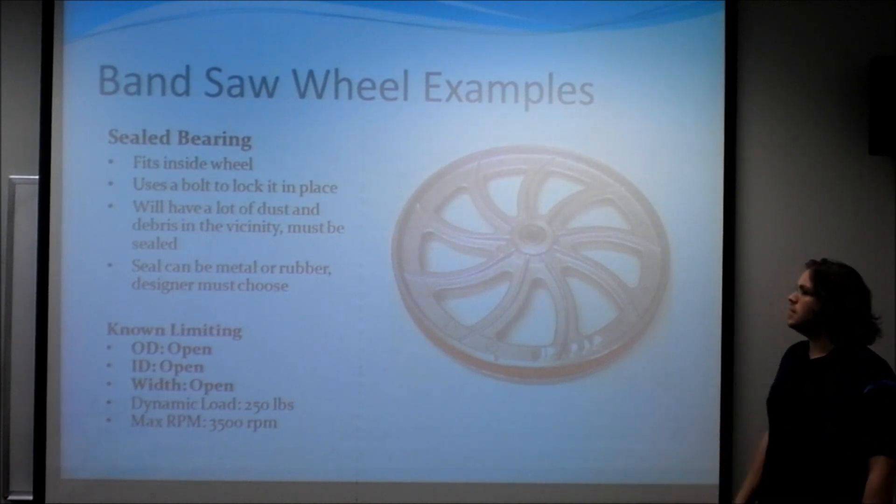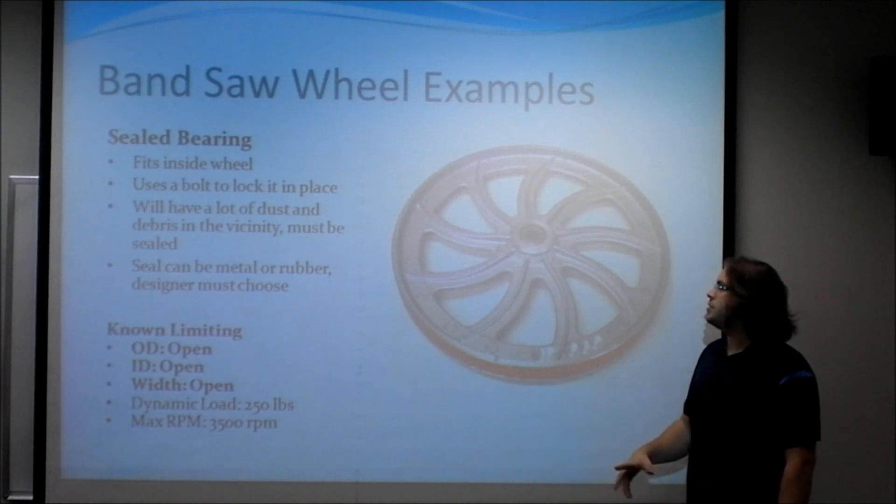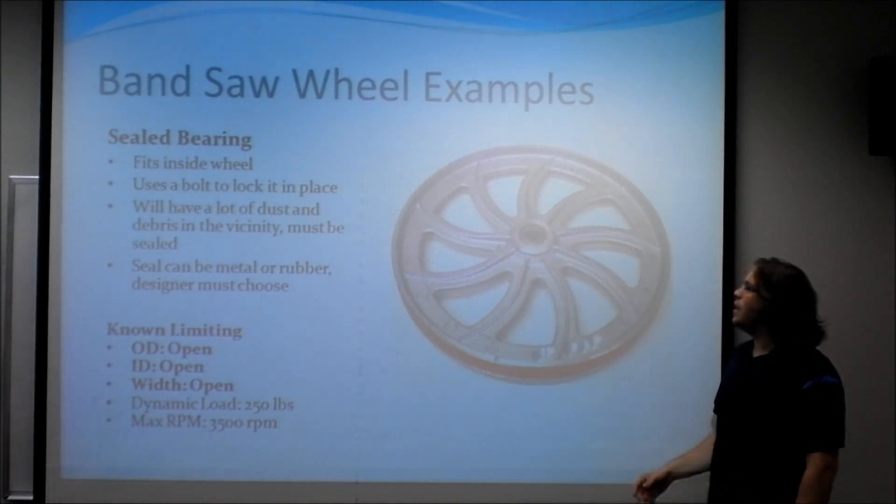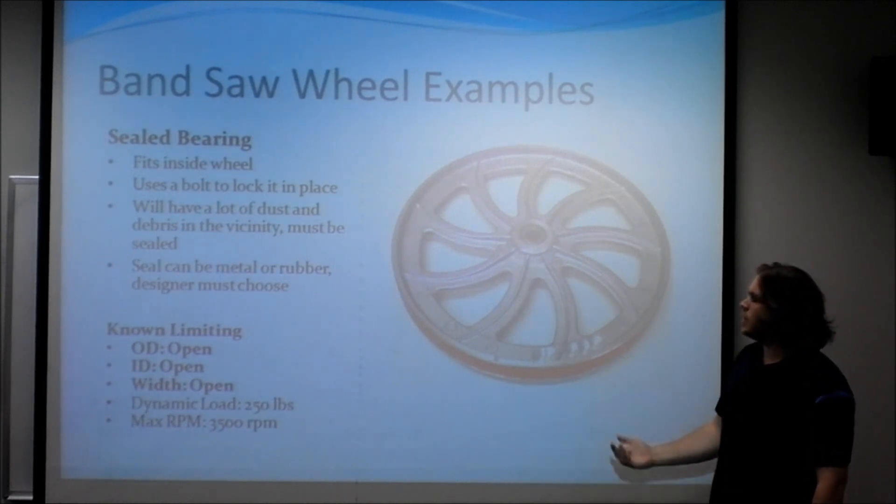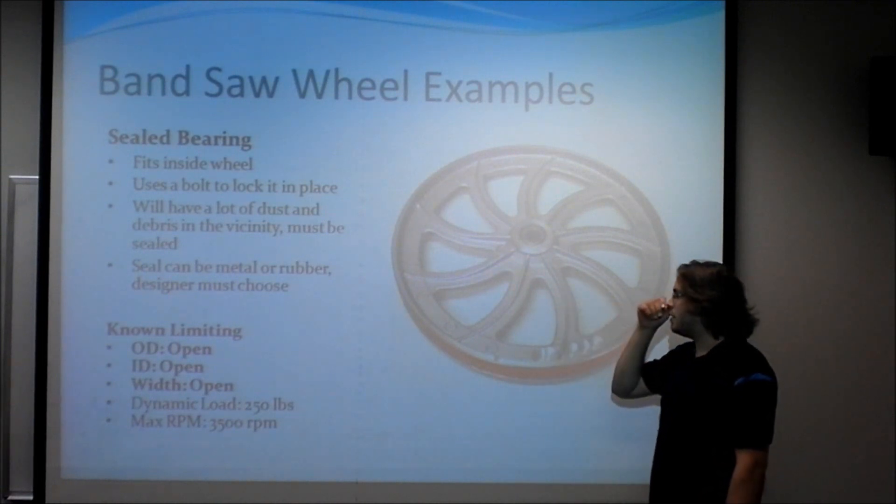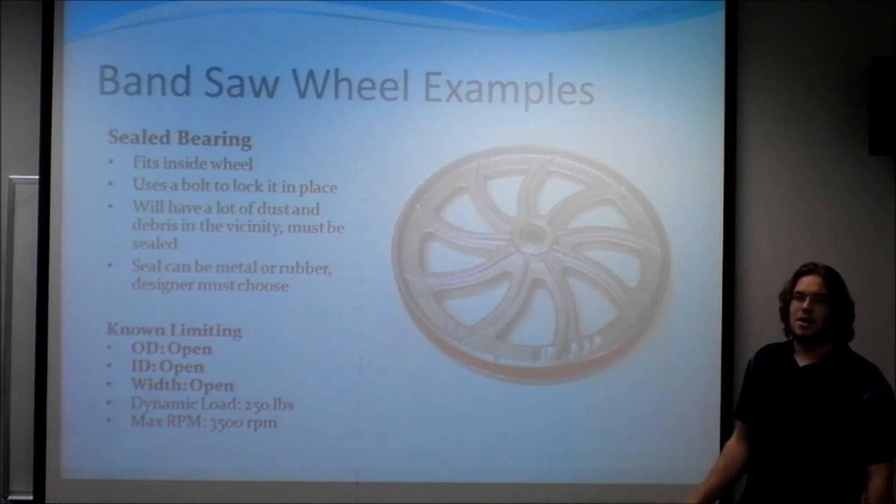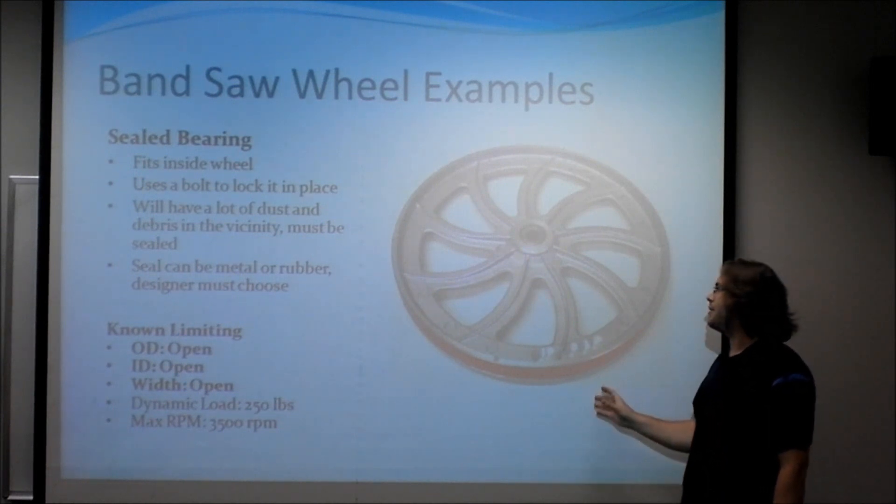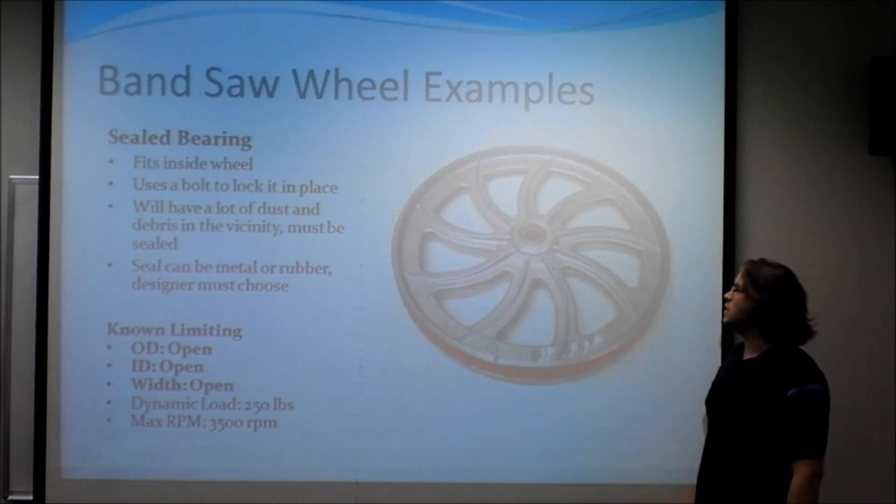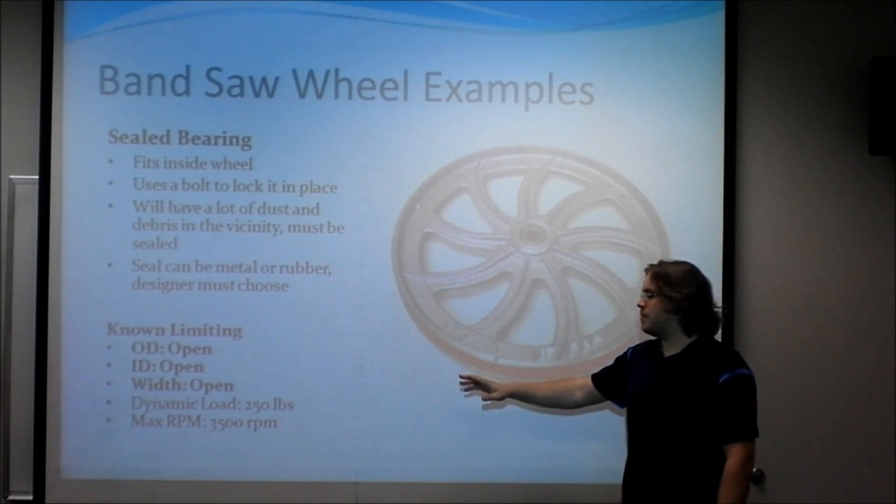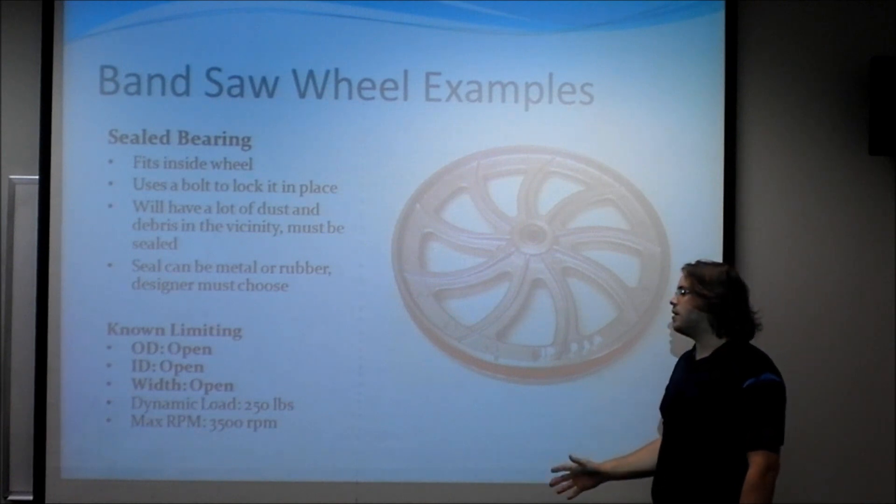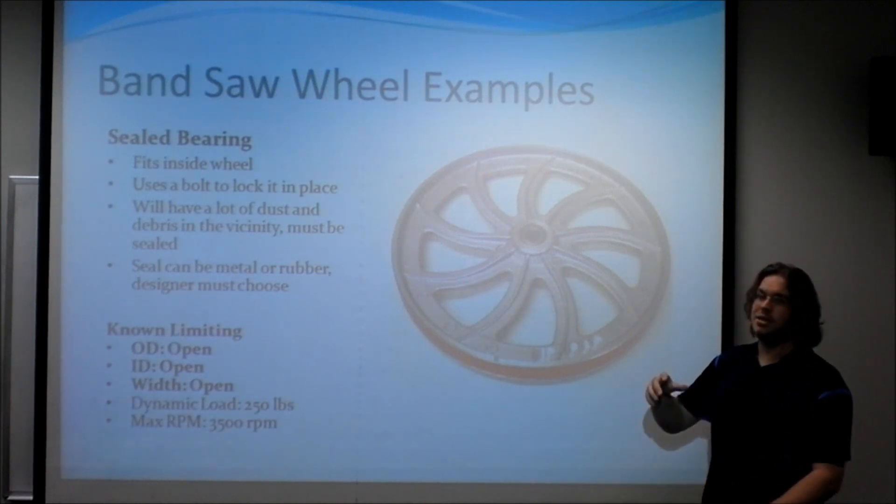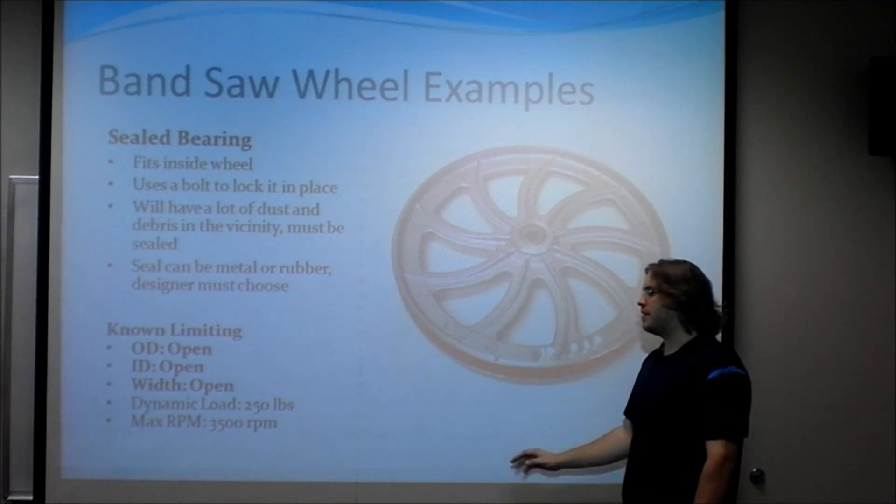Our second example is a bandsaw wheel. The difference between this type of bearing and the one using the bicycle is that this bearing actually fits inside of the wheel and is bolted on from both sides. So the biggest concern that we're going to have on this design is the material to be flowing through the wheel, around the wheel, through the fact that you are cutting up wood or metal or rubber, any type of shavings will be moving around there. So a steel design would be our ideal choice. We can choose metal or rubber, but we would prefer metal for this type due to the more industrial application. Our outer diameter, inner diameter, and width are all open choices. We don't really have any specific choice. But one thing we do know is that the dynamic load is 250 pounds. This is the weight of the blade under tension. And also, the max RPM is 3500 RPMs.